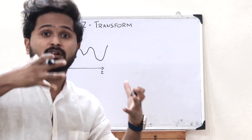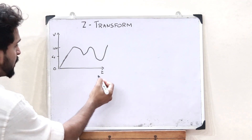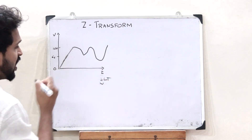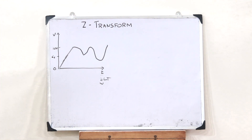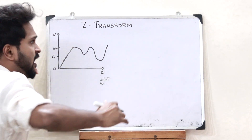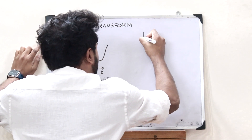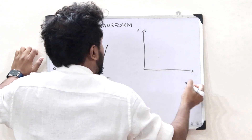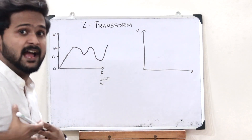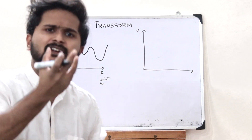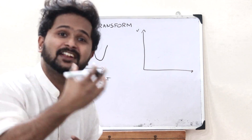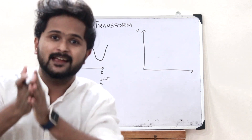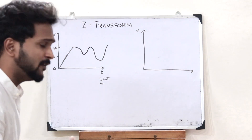To convert this particular signal from the time domain onto the frequency domain, that is when we use a Laplace transform. But let us take another scenario. Let us assume that I am measuring that velocity at discrete time intervals.